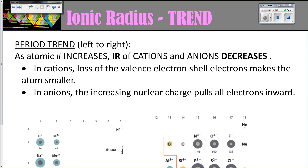For the ionic radius period trend: as you move along a period and your atomic number increases, the ionic radius of both your cations and your anions is going to decrease. In cations, the loss of the valence electron shell makes the atom smaller — for example, calcium or beryllium losing those two electrons means you have one less shell, so it's going to be smaller. In anions, the increasing nuclear charge pulls all those electrons inward, making them smaller as you go across the period.